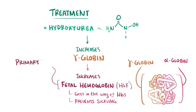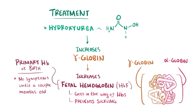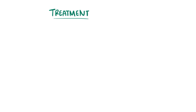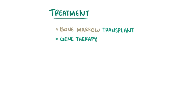HbF is the primary hemoglobin at birth, which explains why sickle cell symptoms don't happen until a few months of life, when adult hemoglobin starts to predominate, which contains the mutated beta globin. More rarely, bone marrow transplants have been used in some patients, and given that sickle cell involves a single point mutation, gene therapy is another option being researched.